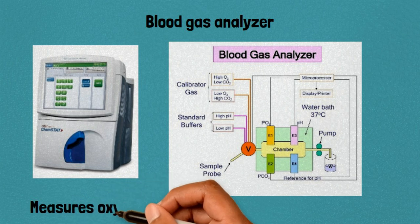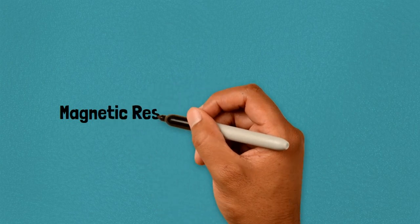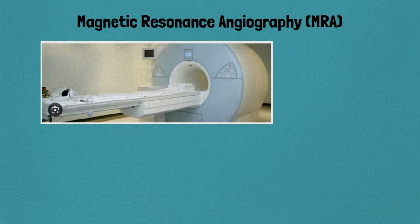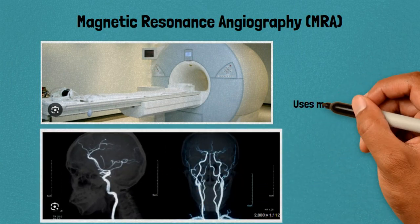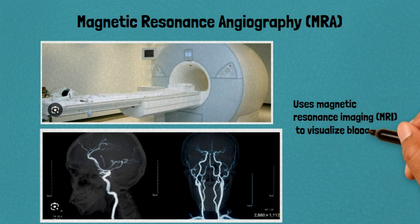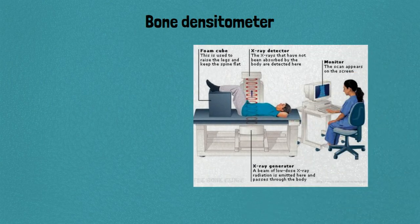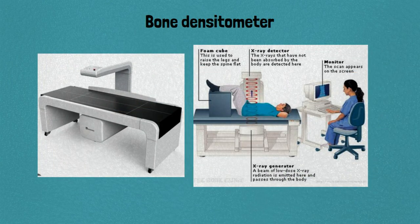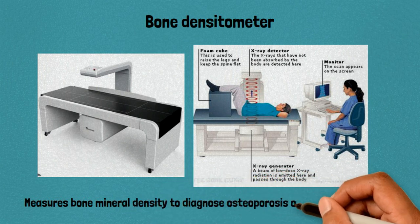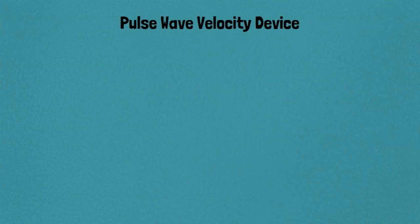27. Blood gas analyzer: measures oxygen and carbon dioxide levels in the blood. 28. Magnetic resonance angiography: uses magnetic resonance imaging to visualize blood vessels. 29. Bone densitometer: measures bone mineral density to diagnose osteoporosis or assess fracture risk.